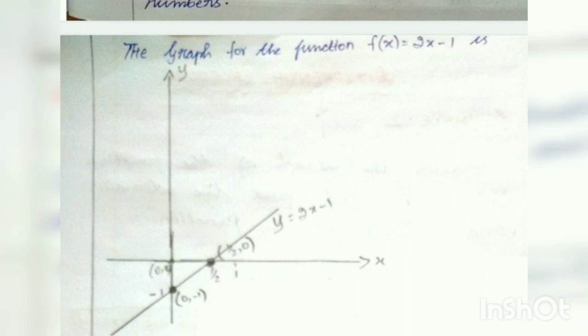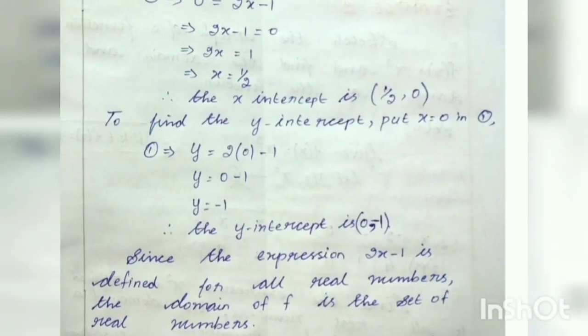Now look at the graph. The graph of the function f of x equal to 2x minus 1. To draw the graph: first draw the x-axis and y-axis, then mark the origin at (0, 0). Then mark the two points we found - the x-intercept and y-intercept. Plot the two points (1/2, 0) and (0, minus 1) as dots, then join those two dots and you will get a straight line. This is the graph for the function f of x equal to 2x minus 1. Hope it is very clear. If you have any doubts, let me know in the comment section.